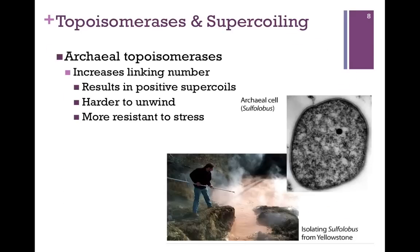Archaeal topoisomerases increase the linking number, resulting in positive supercoils — meaning the DNA is overwound and harder to unwind. Archaeal are prokaryotic organisms that tend to live in extreme conditions such as high pH or high temperature — they're called extremophiles. An example is Sulfolobus, isolated from Yellowstone. High pH and high temperature would tend to melt the DNA, so overwinding it prevents that from happening.